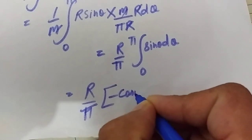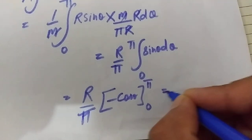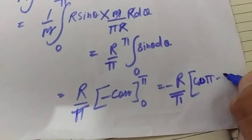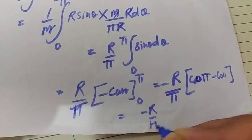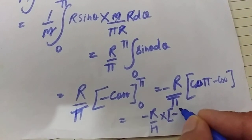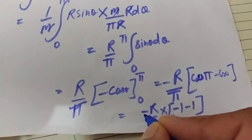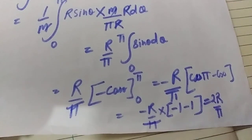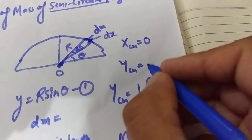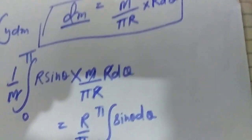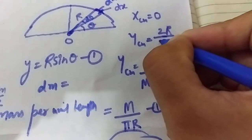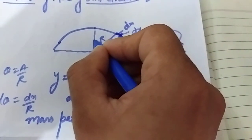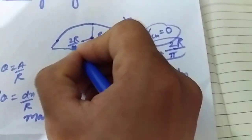Evaluating the integral, we get −R/π × [cos θ] from 0 to π. This gives −R/π × (cos π − cos 0) = −R/π × (−1 − 1) = −R/π × (−2) = 2R/π. So the y-coordinate of center of mass is 2R/π. The x-coordinate of center of mass is 0, and the y-coordinate of center of mass is 2R/π.